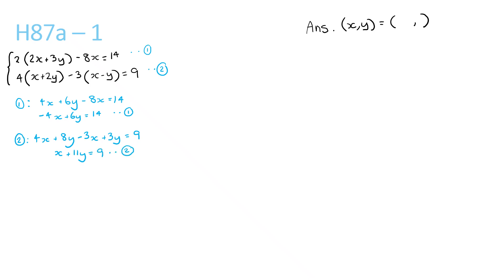Now we can actually simplify the top equation further if we divide the whole thing by 2. So we get negative 2x plus 3y equals 7. Now we look at equations 1 and 2, this equation here and this equation here.